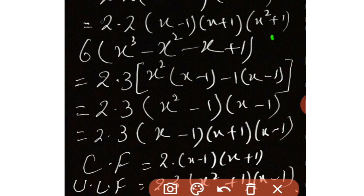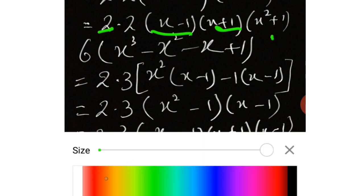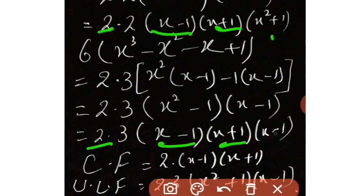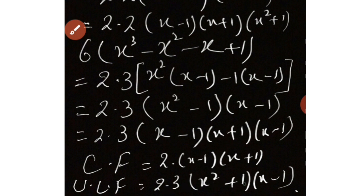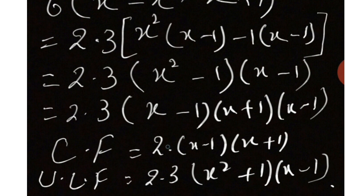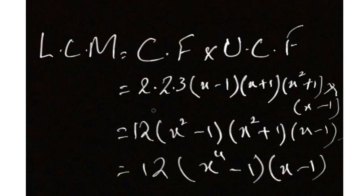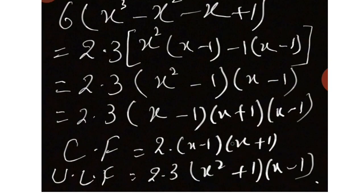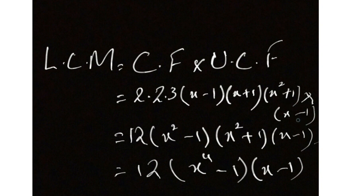Yahan dekhiye girls, donon mein common factor hai: 2 — yahan check kijiye, 1 aur 2 jo hai woh common factor hai. Phir hai (x minus 1) aur (x plus 1) — yeh donon mein hai. Uske baad uncommon factor check karein: x², 1 aur 2 hai, (x² plus 1) hai, 3 hai, aur last one hai (x minus 1). Toh humne inko likh diya: 2, 3, (x² plus 1), and (x minus 1). Ab inko multiply karenge toh 2 dot 2 dot 3 — matlab 12 ho gaya. Isi tarah (x minus 1)(x plus 1)(x² plus 1)(x minus 1) as it is — inko multiply karke likh diya.